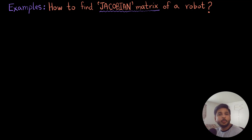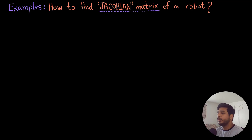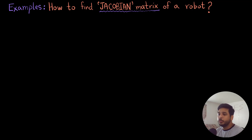Hi everyone, welcome back to another video in this video series on Robotics 101. I am Zain Khan and in this video we are going to talk about how to find the Jacobian matrix of a robot. We are going to do a couple of examples together.